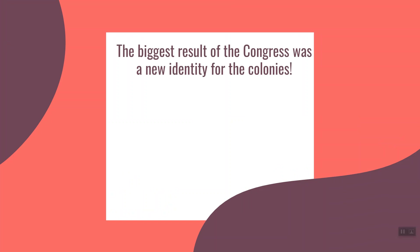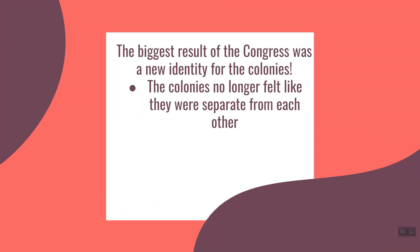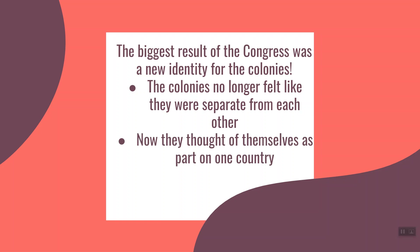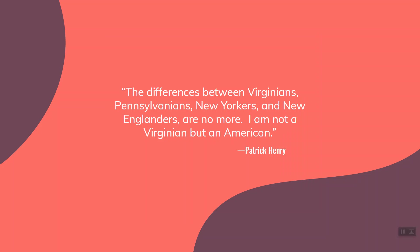The biggest result of the Congress was a new identity for the colonies. Before, Virginia felt like its own country and New York felt like its own country. But after the First Continental Congress, when they recognized they could all work together, they felt like they were part of one country. Patrick Henry said: 'The differences between Virginians, Pennsylvanians, New Yorkers, and New Englanders are no more. I am not a Virginian, but I am an American.' That speaks volumes — they were now unified.